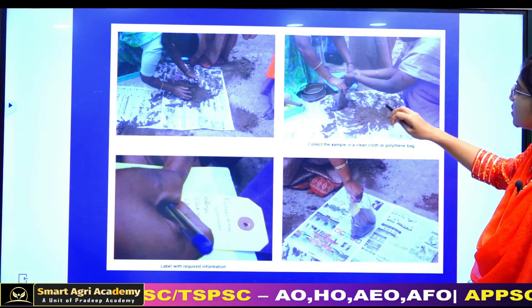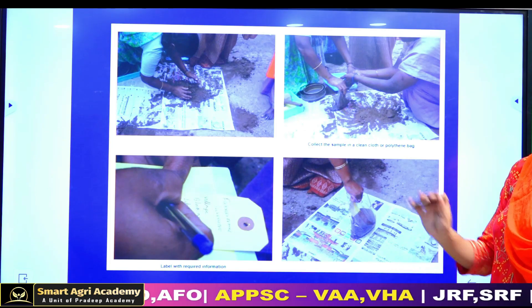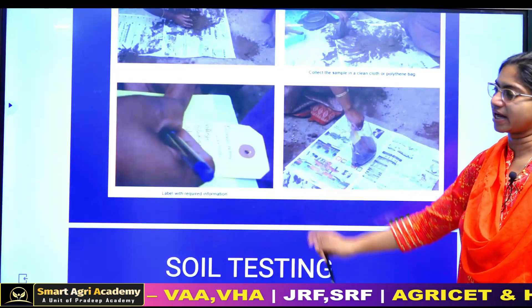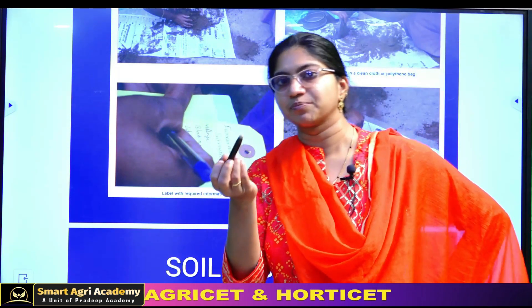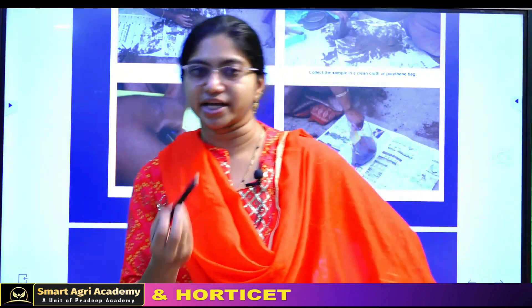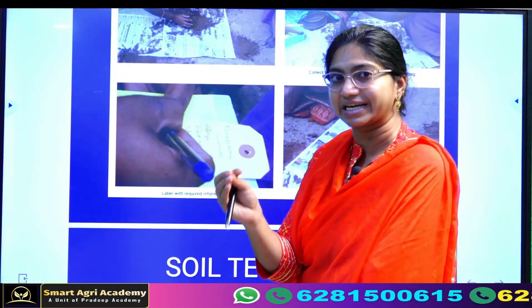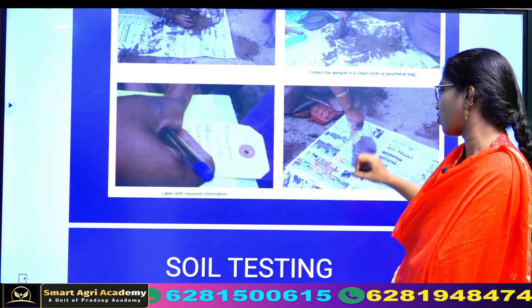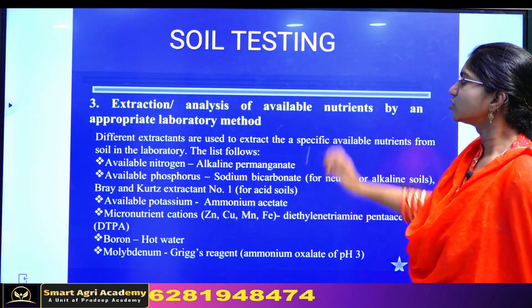After completing the quartering method, use a clean polythene bag. You can use a tag with information: the farmer's name, the survey number, the farmer's phone number, the crop planted, and the water source. Mix the fertilizer information and the date of collection, then get the tag ready for the lab.